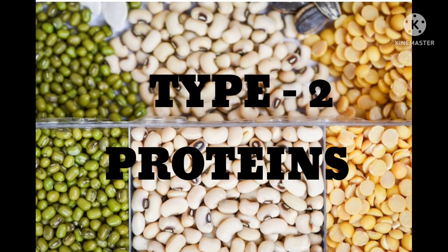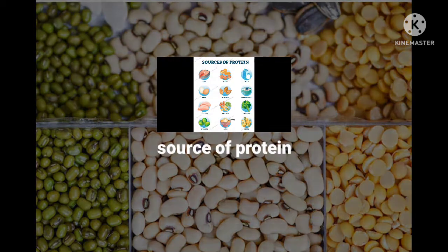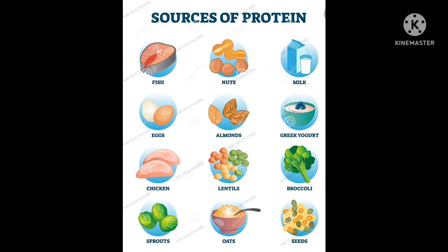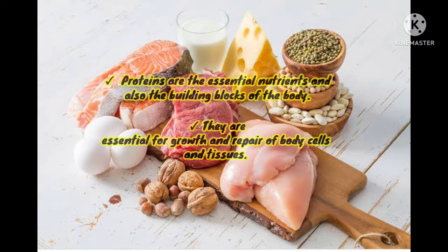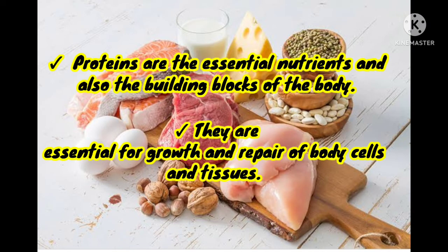The second nutrient is proteins. The sources of proteins — known as body-building nutrients — are essential amino acids. Proteins are made up of essential amino acids which are essential to our body. Proteins are essential nutrients and also the building blocks of the body. They are essential for growth and repair of body cells and tissues.